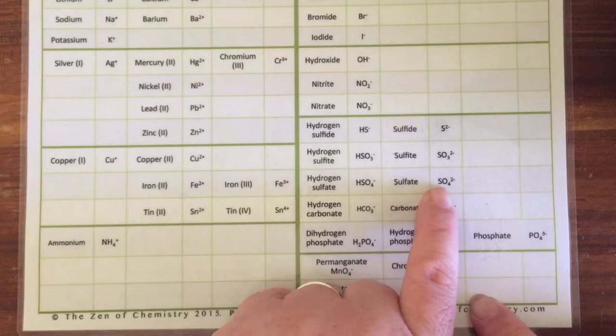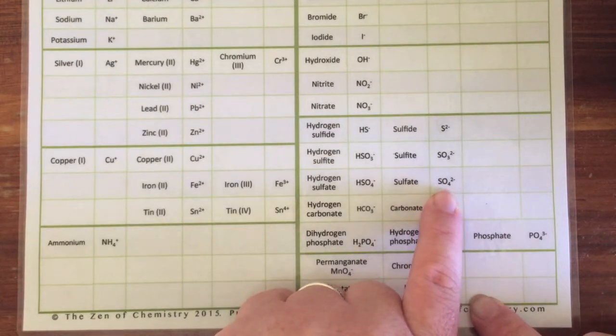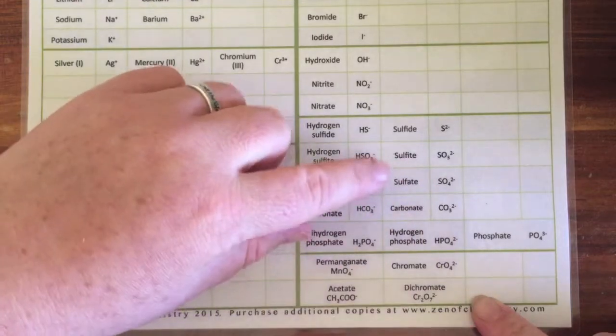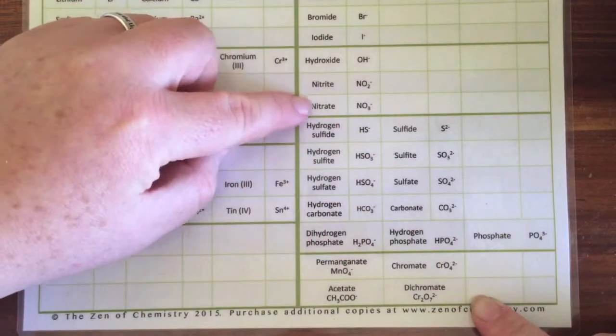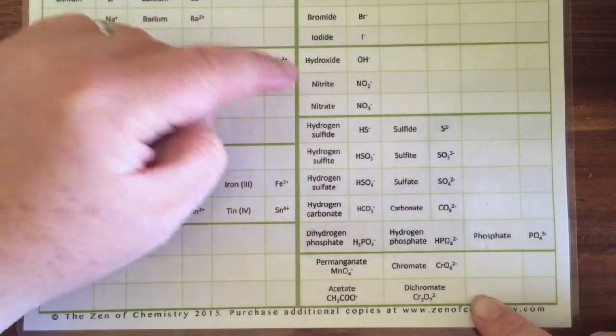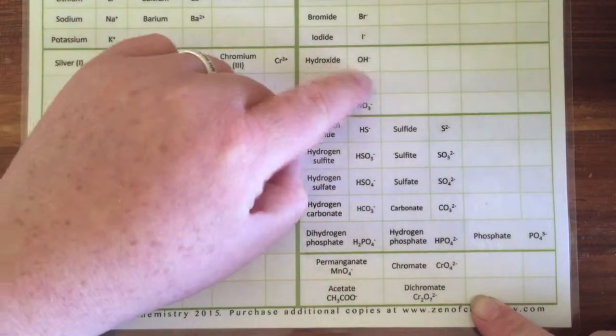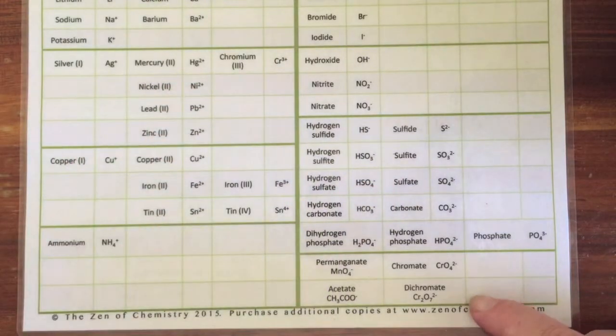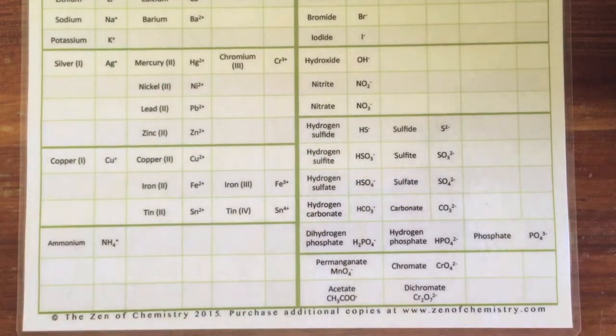If we look at our sulfate, sulfate has four oxygens and sulfite has three. You'll notice too that the charges on -ites and -ates are the same as well - nitrite and nitrate are both minus one, sulfite and sulfate are minus two.